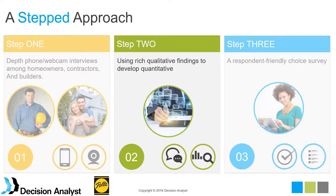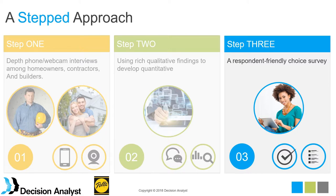Step two was using those qualitative findings to help refine and develop our quantitative survey instrument. This involved a day-long work session at the Pella offices with Suresh and his team to hammer out a good actionable conjoint design using the qualitative findings. This is a step that's highly recommended — rather than going back and forth through emails or conference calls, really scheduling the time and dedicating a day for an in-person meeting to refine the conjoint instrument. Step three was the conjoint survey itself.